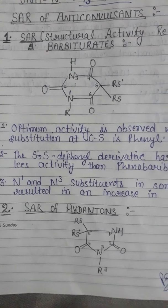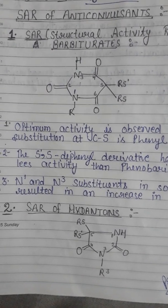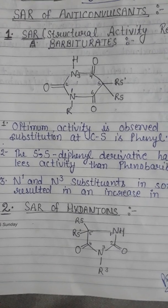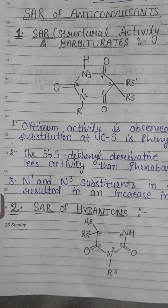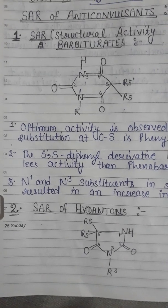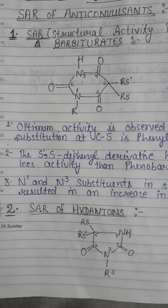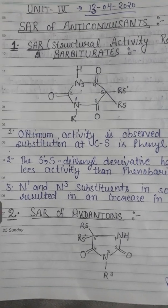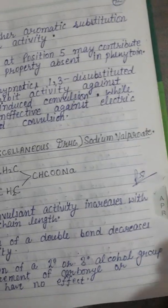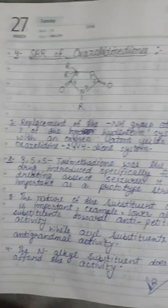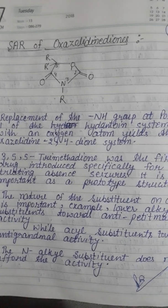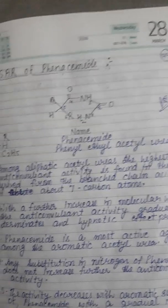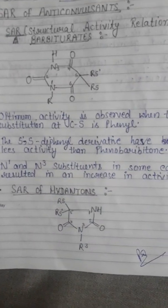Today we are going to discuss a new topic: SAR, that is structural activity relationship, of anti-convulsant drugs. According to their classification, anti-convulsant drugs are classified into different categories like barbiturates, hydantoin, miscellaneous drugs like sodium valproate, SAR of oxazolidinediones, and SAR of phenacemide.